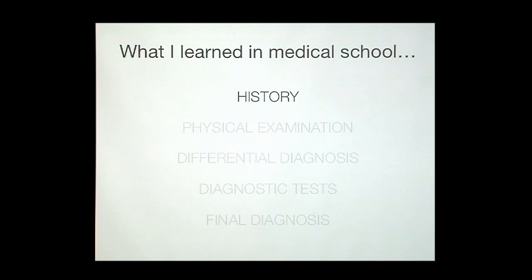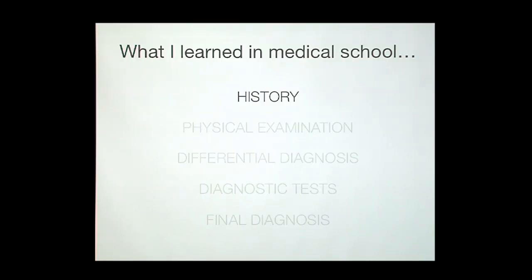When you approach an undifferentiated patient with a complaint and don't know what's ailing them, you start with the history. History begins with a brief chief complaint — 'I'm here for chest pain' — and then you dive into the history of present illness: when did it start, how bad is it, where does it go, what's associated with it. Then I may ask about past medical history, medications, family history, social history — do you drink, do you smoke, where do you live — and a whole laundry list of review-of-systems questions to get as much history as possible.